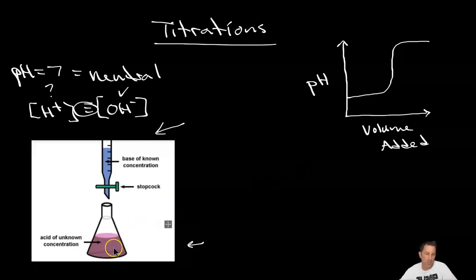In this picture I stole from the internet it looks like they use phenolphthalein. It will turn pink once we've added enough base. So what you would do is you would open this valve, it's called the stopcock, and you would add the base into the acid until it turned pink and you keep track of how much you add.